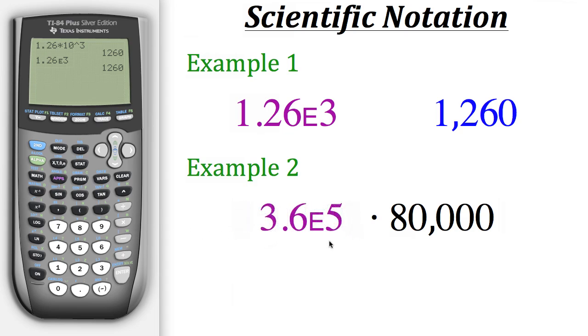...and 80,000 would be the same thing as 8 times 10 to the fourth power. Now let's do that multiplication on our calculator. So we have 3.6 times 10 to the fifth times 8 times 10 to the fourth...